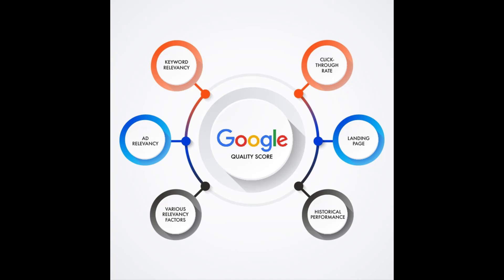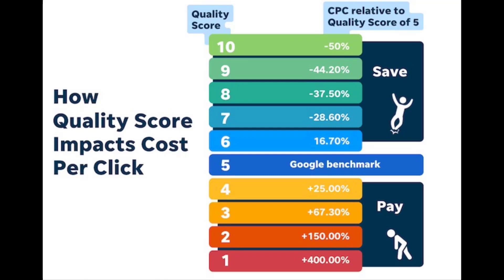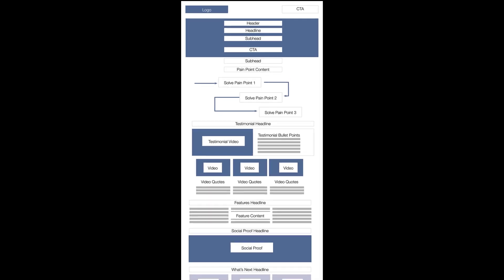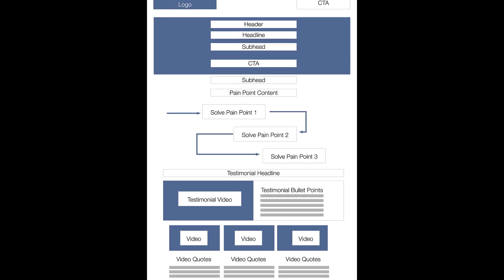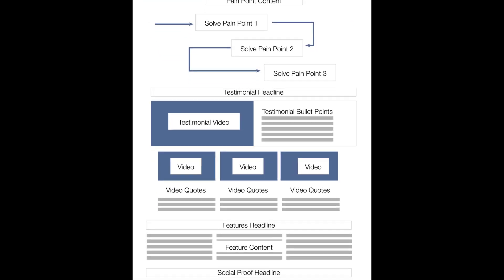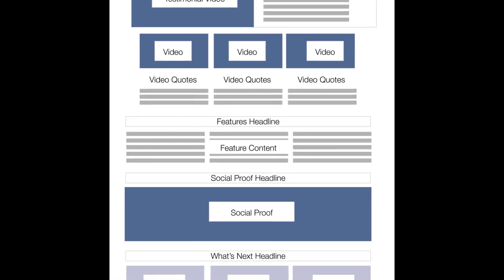Advertising platforms use a similar SEO algorithm to determine your quality score — an arbitrary score given to each page based on how it relates to the keyword. This helps platforms keep irrelevant information off certain searches, but it also allows them to artificially inflate the price of a click. The code structure for these pages is similar to SEO structure, with a few major differences.